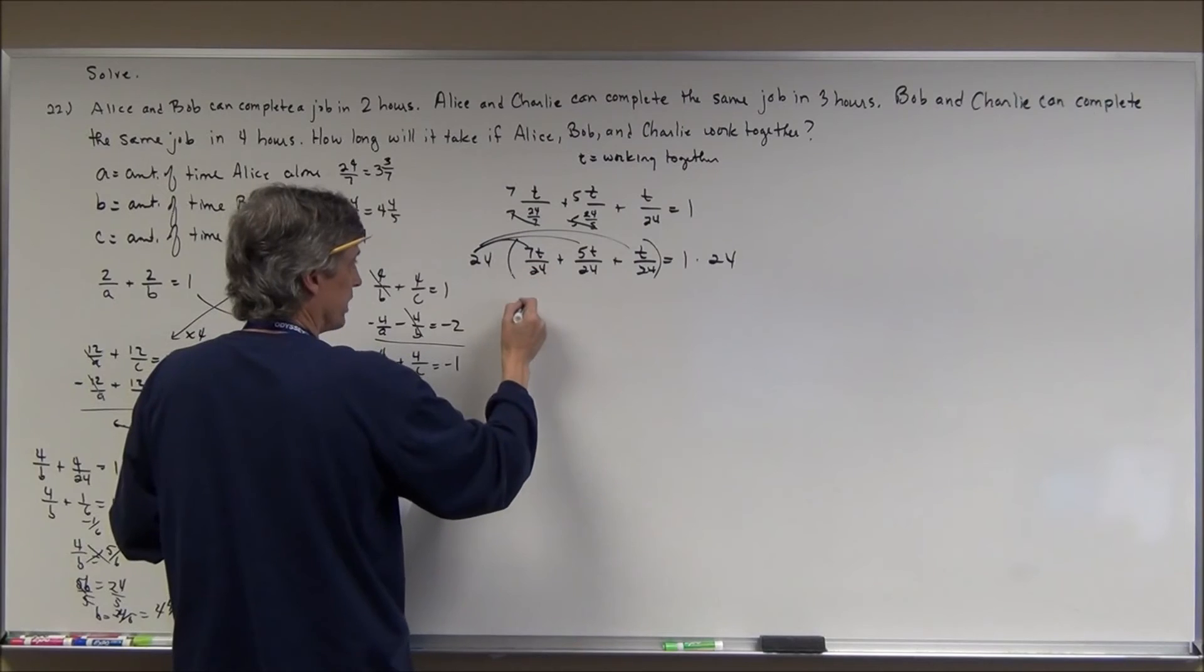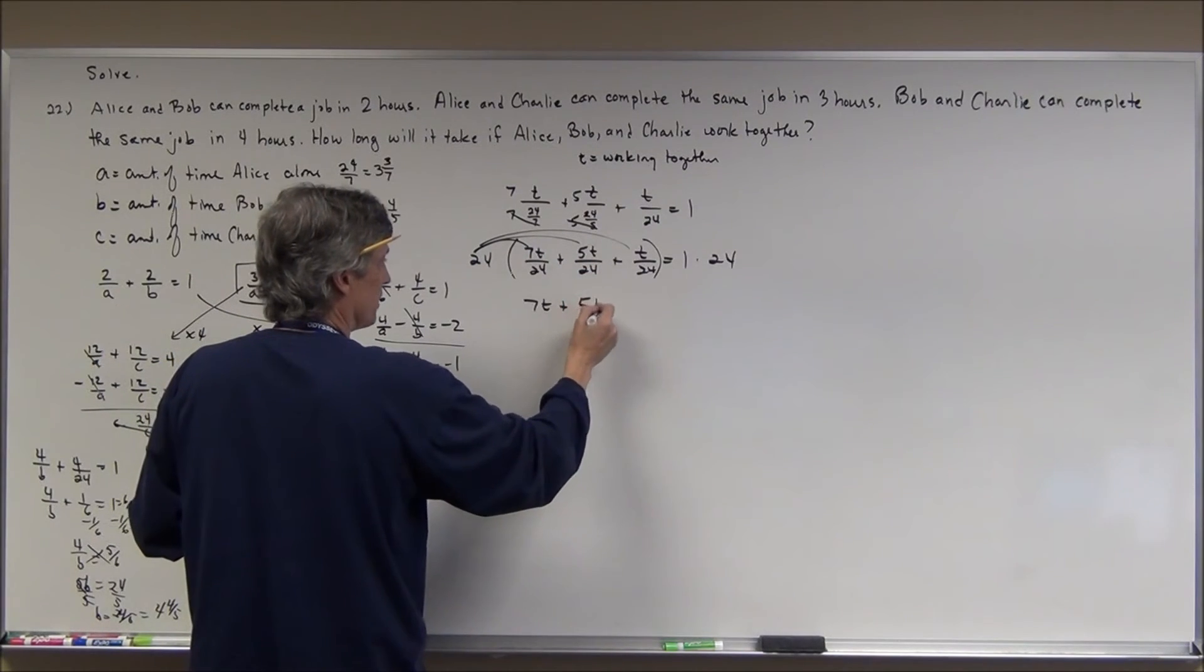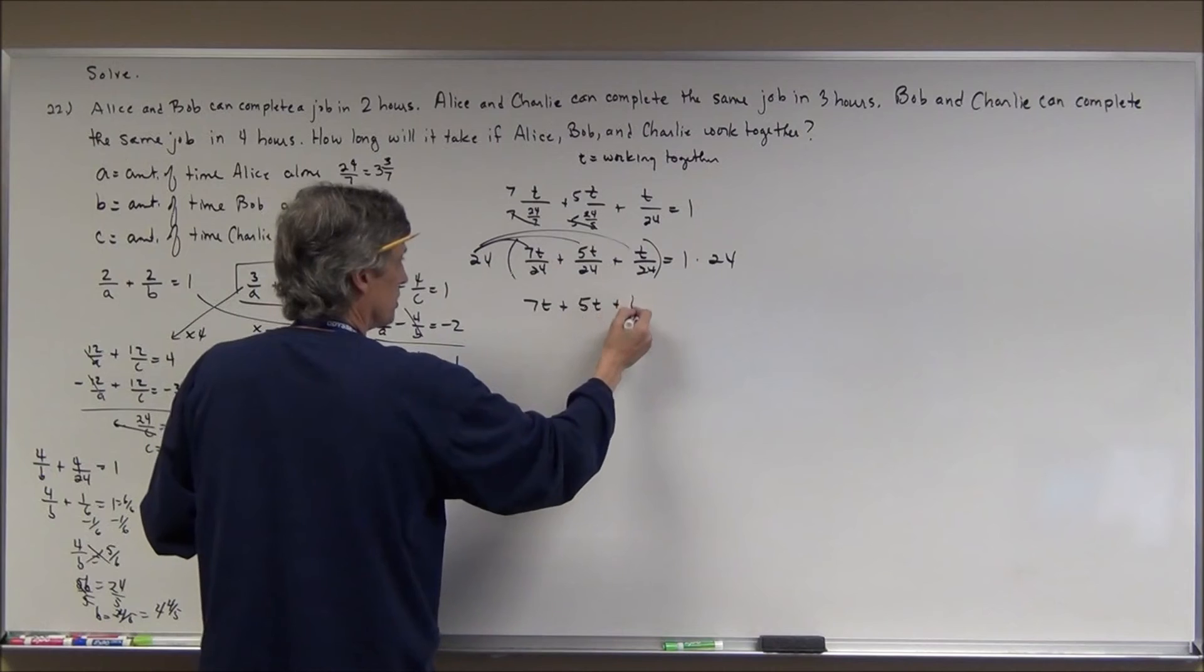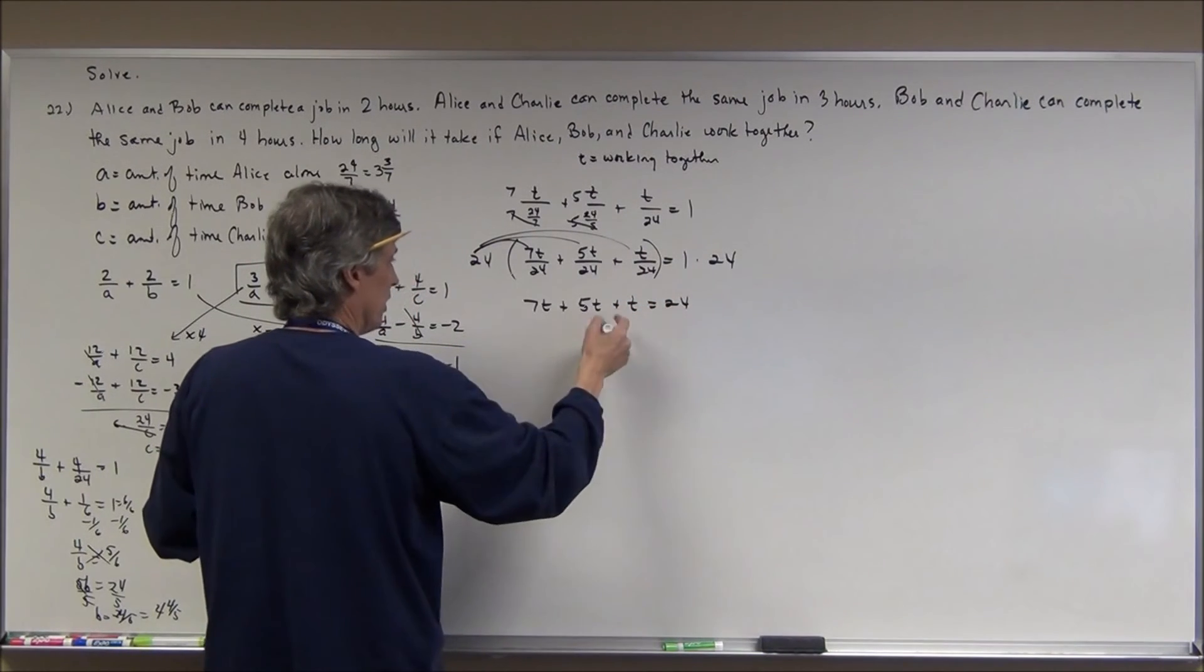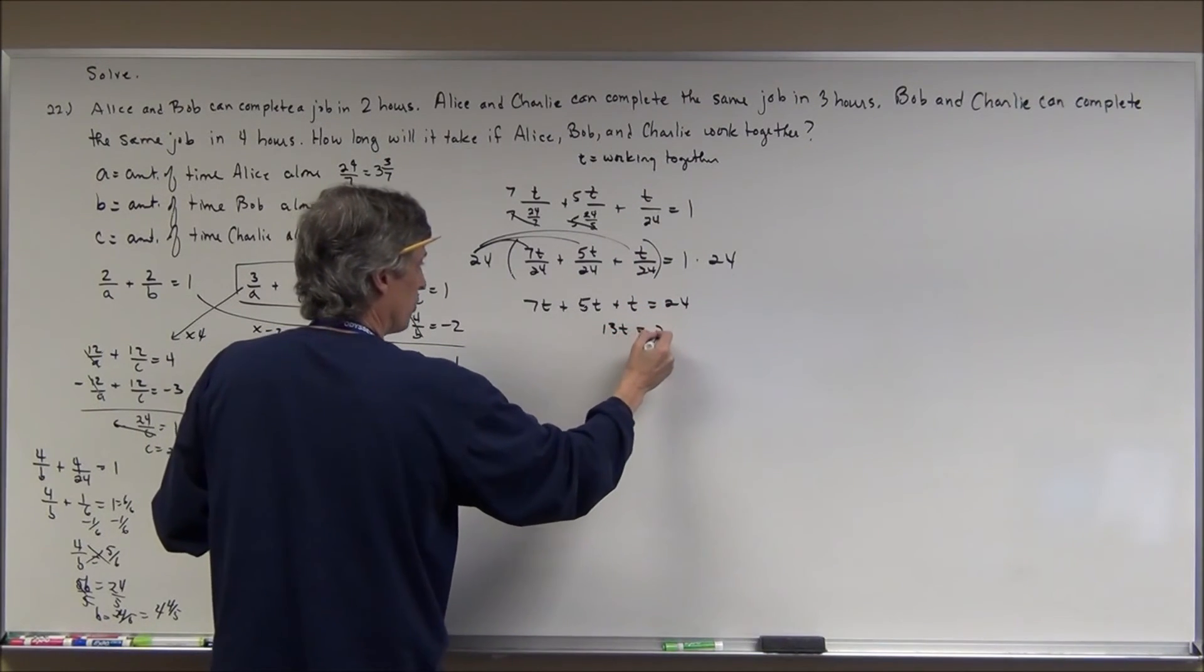So, the 24ths cancel 7T, plus the 24ths cancel 5T, plus the 24ths cancel T, equals 24. 13T equals 24.